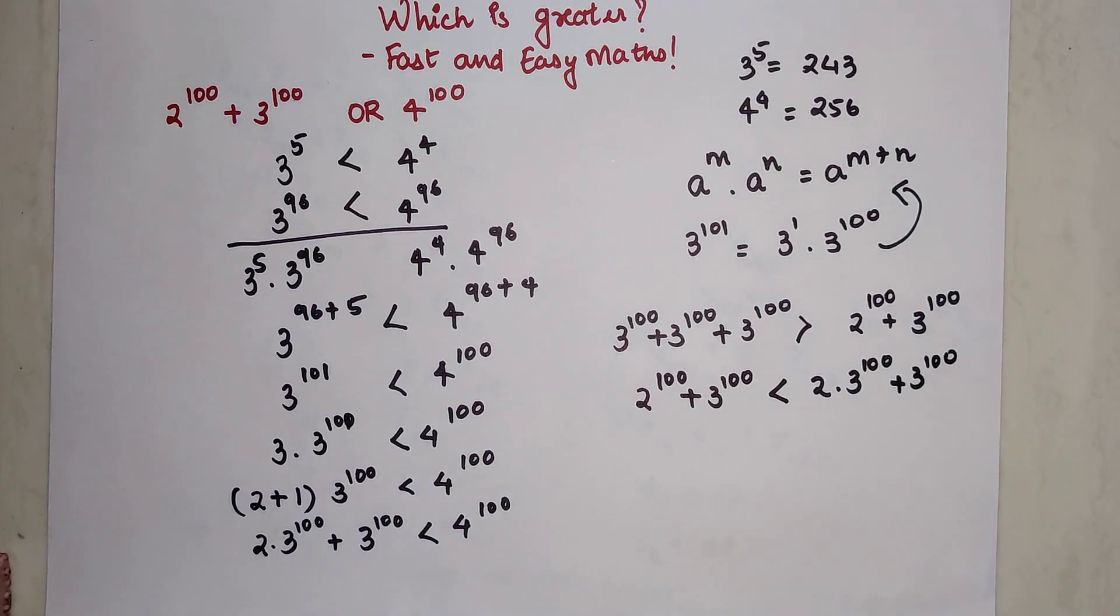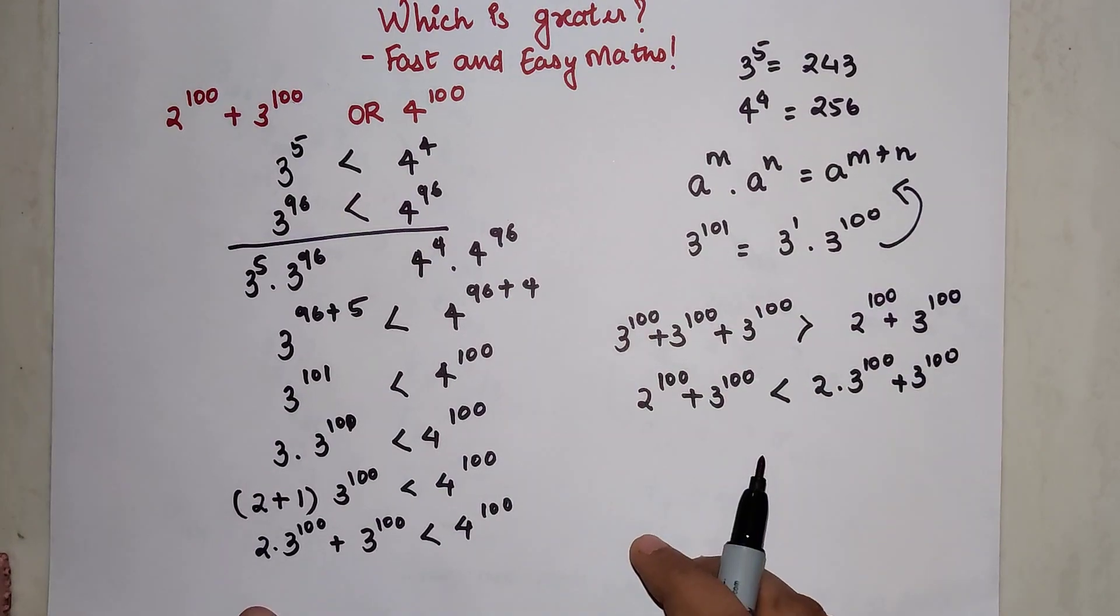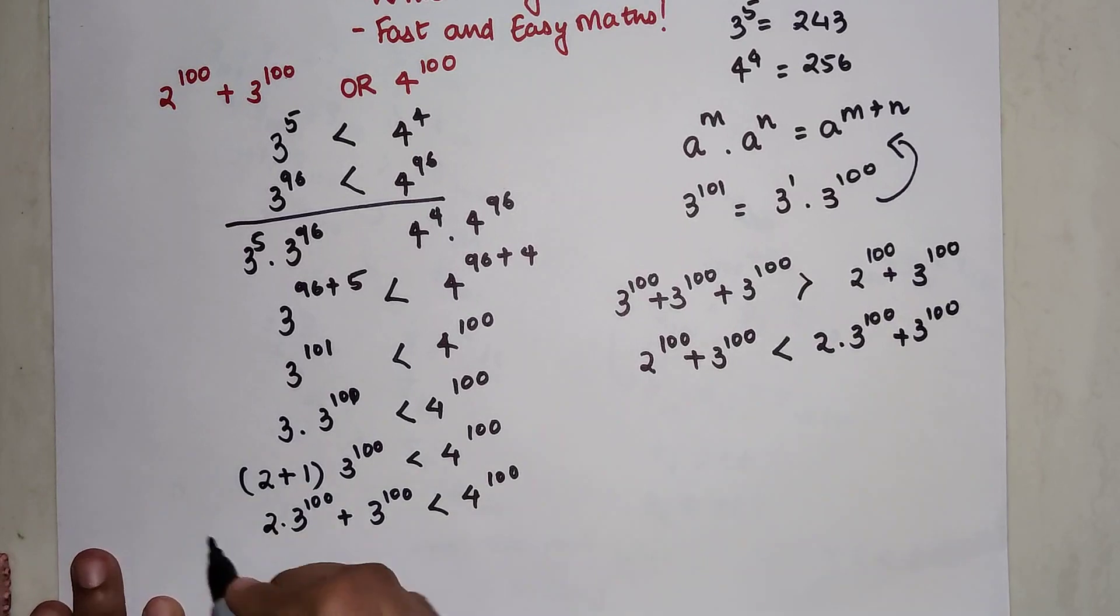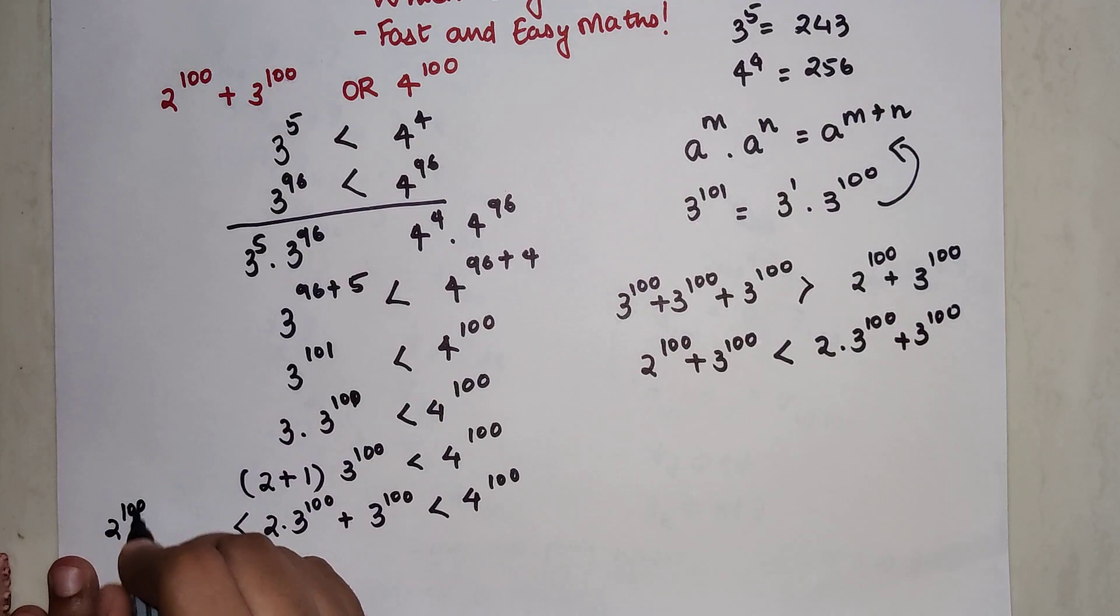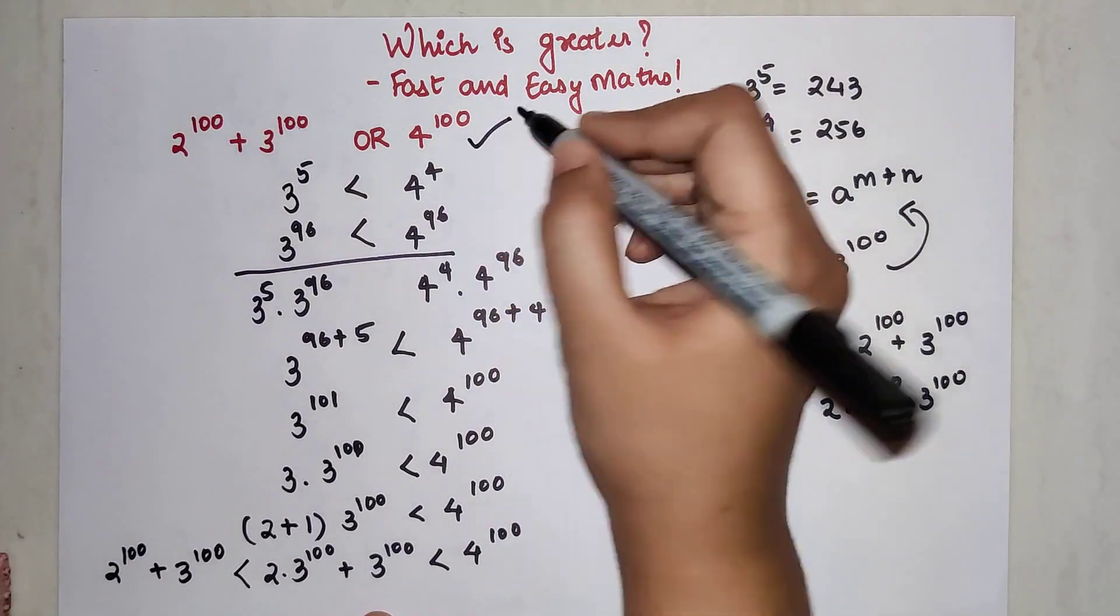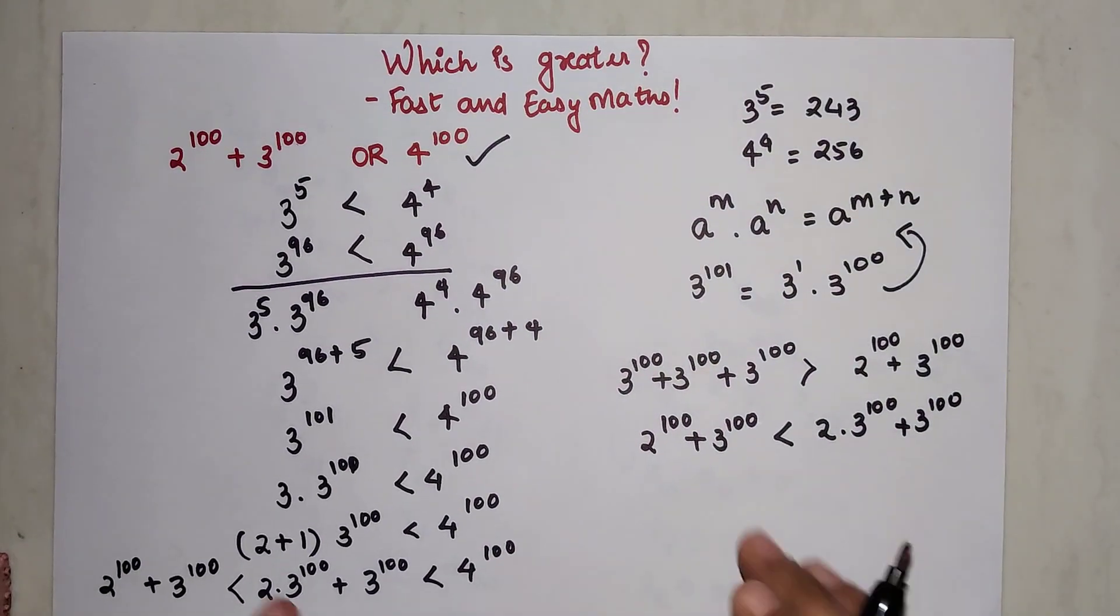Students, don't forget at the end of this video I'm going to put up a DIY question whose answers you can mention in the comment section. The trick to solve that question will also be similar to whatever I have done in this particular video. I can say that this entity is greater than 2^100 + 3^100, so by default I can say that this particular 4^100 is the larger one between the two quantities given.